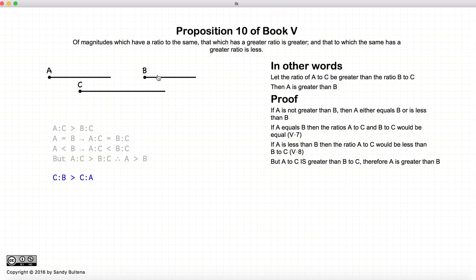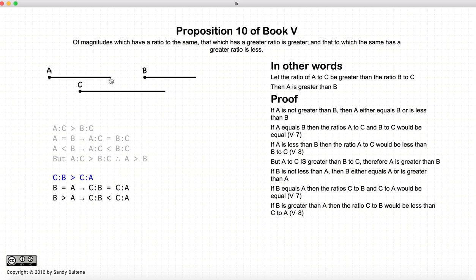Now if we do C to B is greater than C to A, again, if B is not less than A, it's either equal to A or greater than A. From Proposition 7 and 8, again, we end up with contradictions of our original condition. So this violates the original condition, and this violates our original condition, so neither of these two can be true, which leaves us with B is less than A.